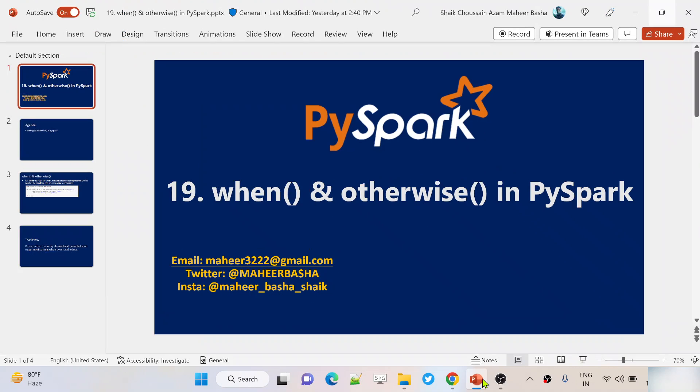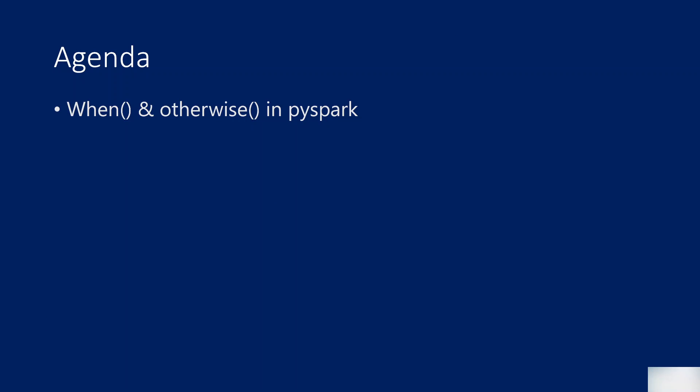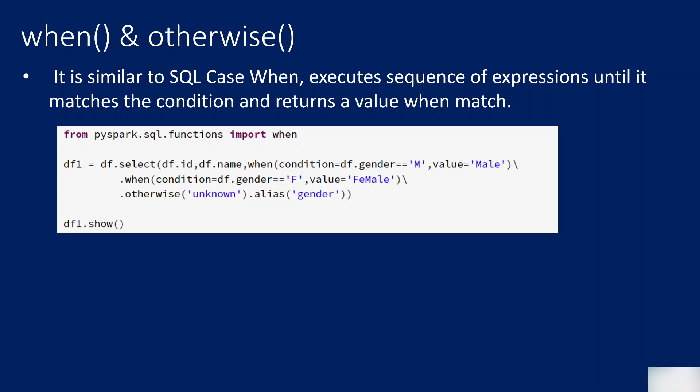Welcome to OFA Studies YouTube channel. This is part 19 in the PySpark playlist. In this video we are going to discuss the when and otherwise functions in PySpark. These functions are similar to the CASE statement in SQL — if a condition is true you get some data, if false you get different data. They are very commonly used functions on top of DataFrame columns in PySpark.